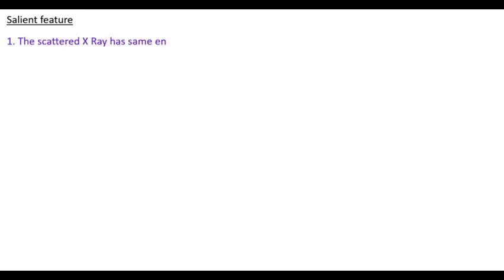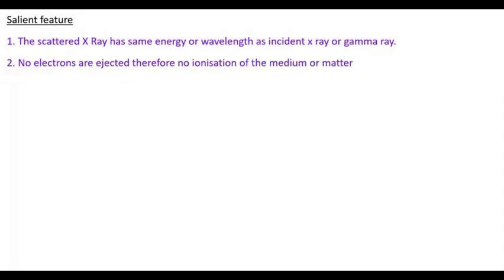The scattered X-ray has same energy or wavelength as incident X-ray or gamma ray. No electrons are ejected, therefore no ionization of the medium or matter in Rayleigh scattering.